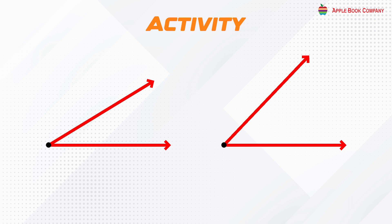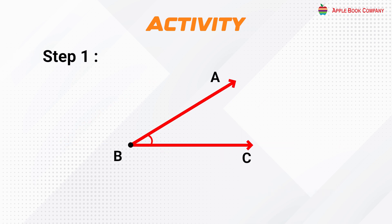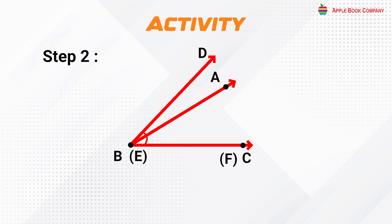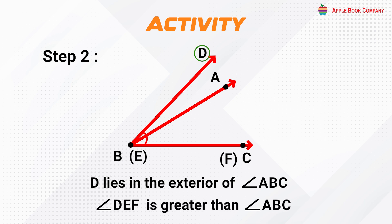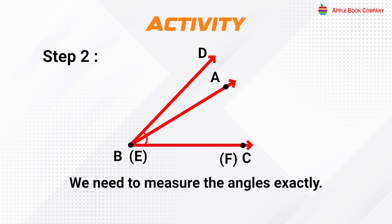Activity: compare the given two angles. Let angle ABC and angle DEF be two angles. We compare them using the following procedure. Step 1: trace angle ABC on a piece of paper. Step 2: place the tracing of angle DEF on angle ABC such that D falls on A and ray DE falls on ray AB as shown in the figure. We observe that F lies in the exterior of angle ABC. Therefore, angle DEF is greater than angle ABC. However, this method is practically difficult. To overcome this difficulty, we need to measure the angles exactly.